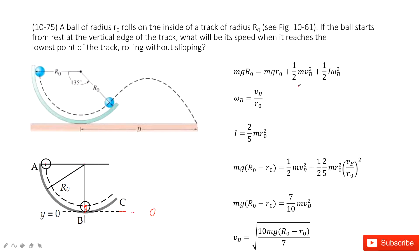The relationship between the linear velocity and angular velocity for B is given by this function. We can also find the moment of inertia I for this ball from our textbook. Substituting omega and I, the function can be simplified, and we can solve for velocity vB.